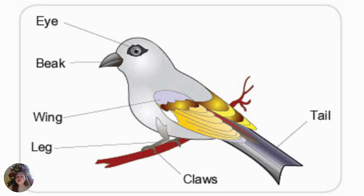Again, the parts of the bird are as follows. They have the eye — can you point where is the eye of the bird? They have the beak, the wings, the legs, the claws, and of course, the tail. All of it is covered with feathers.